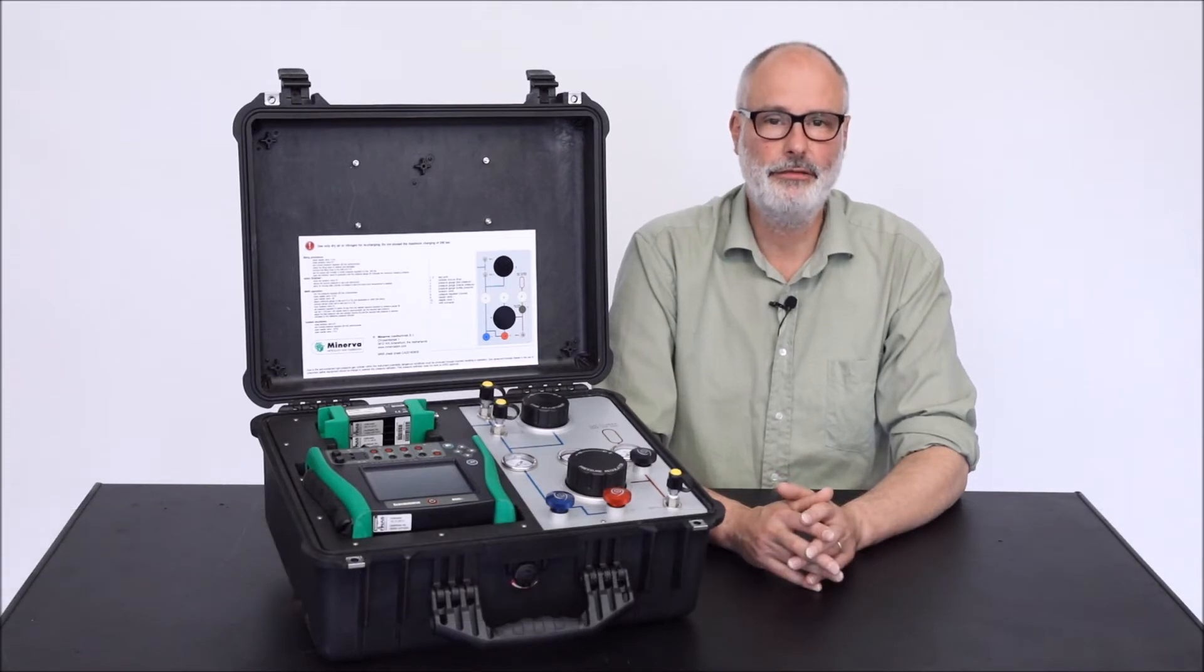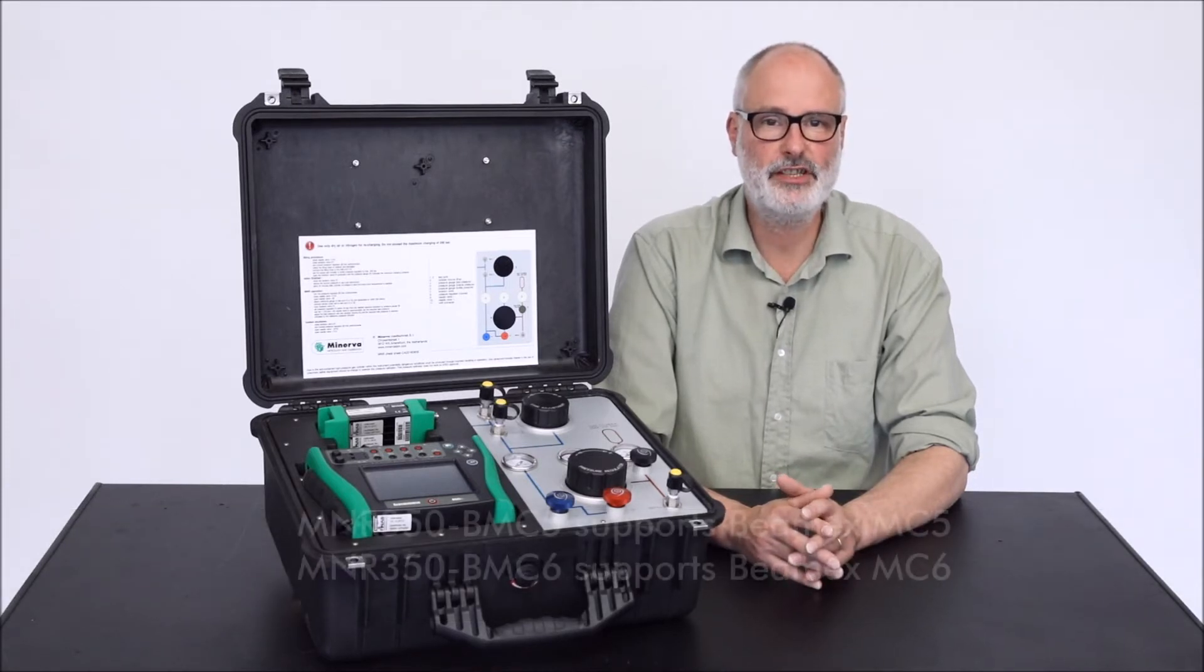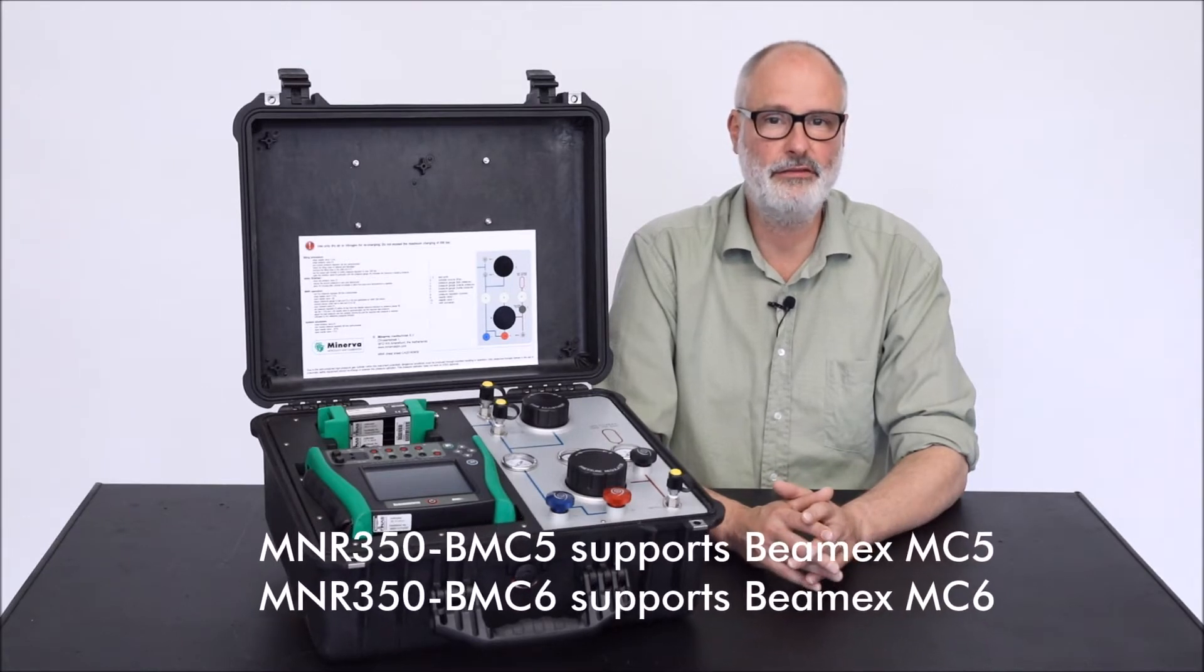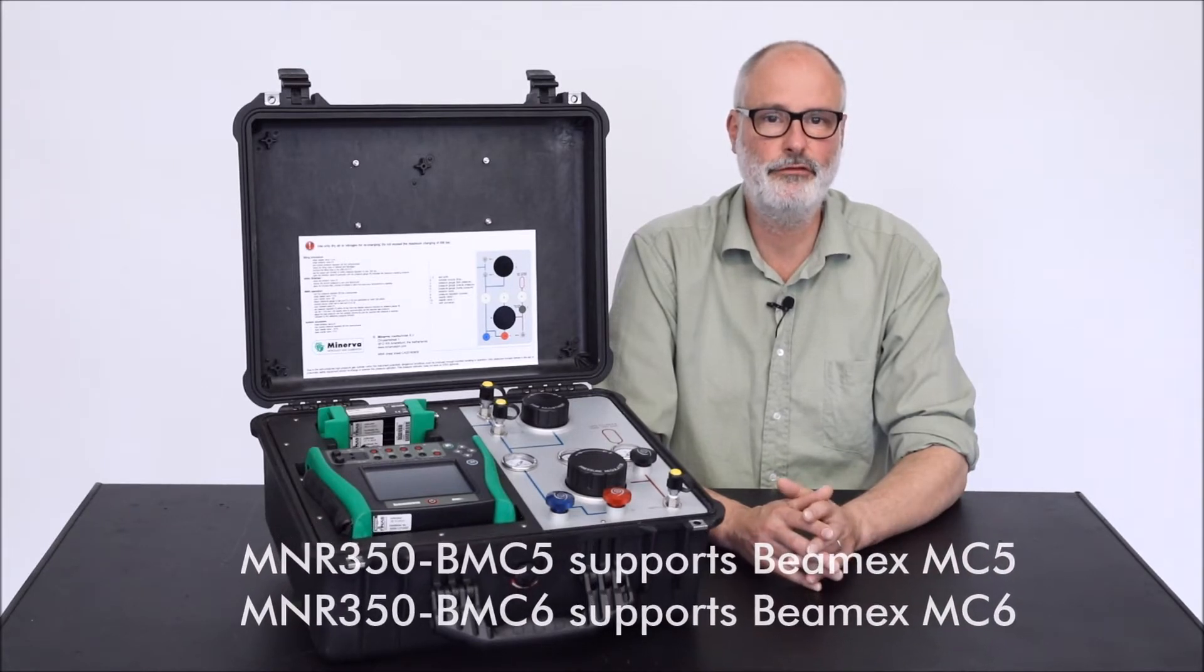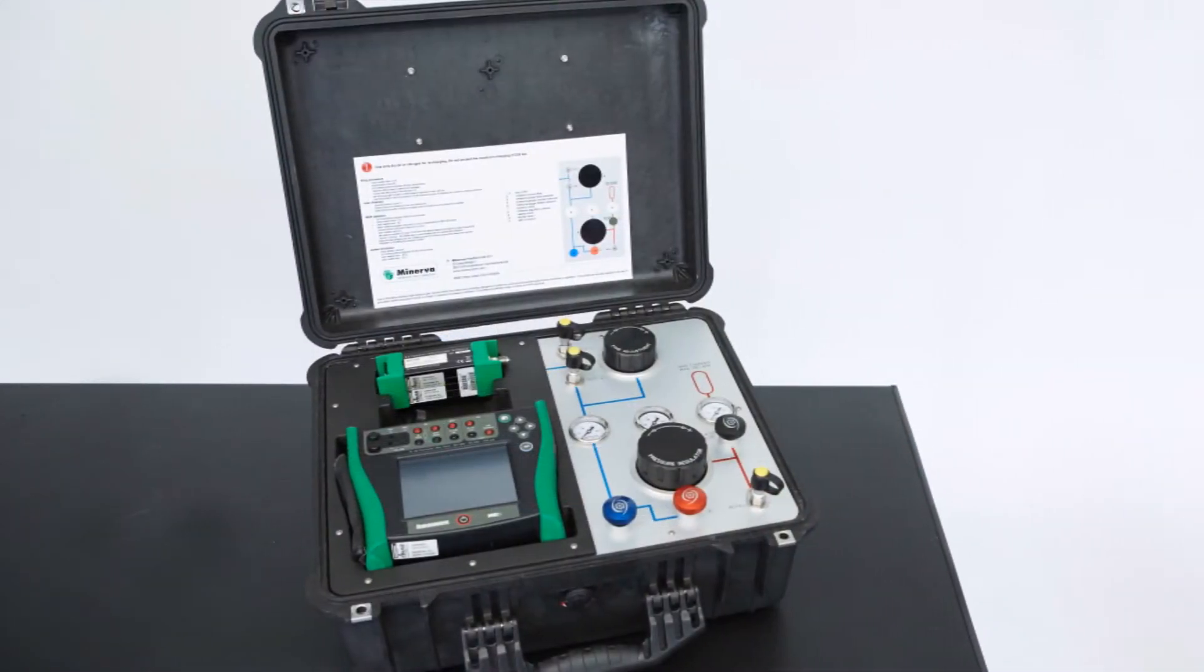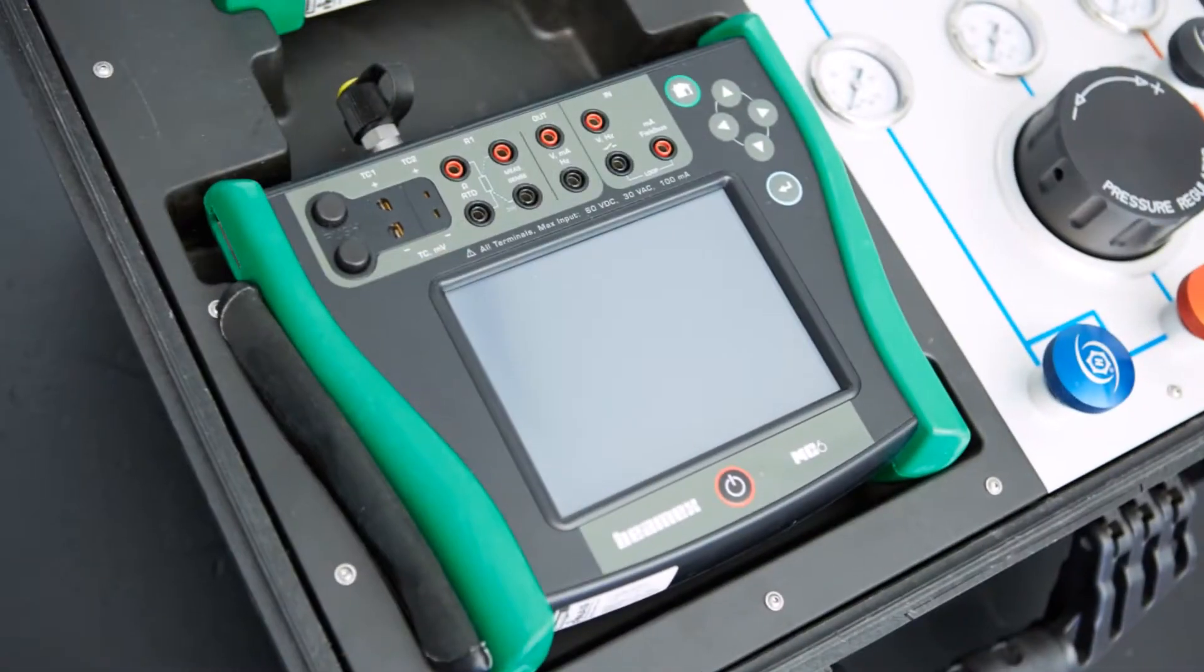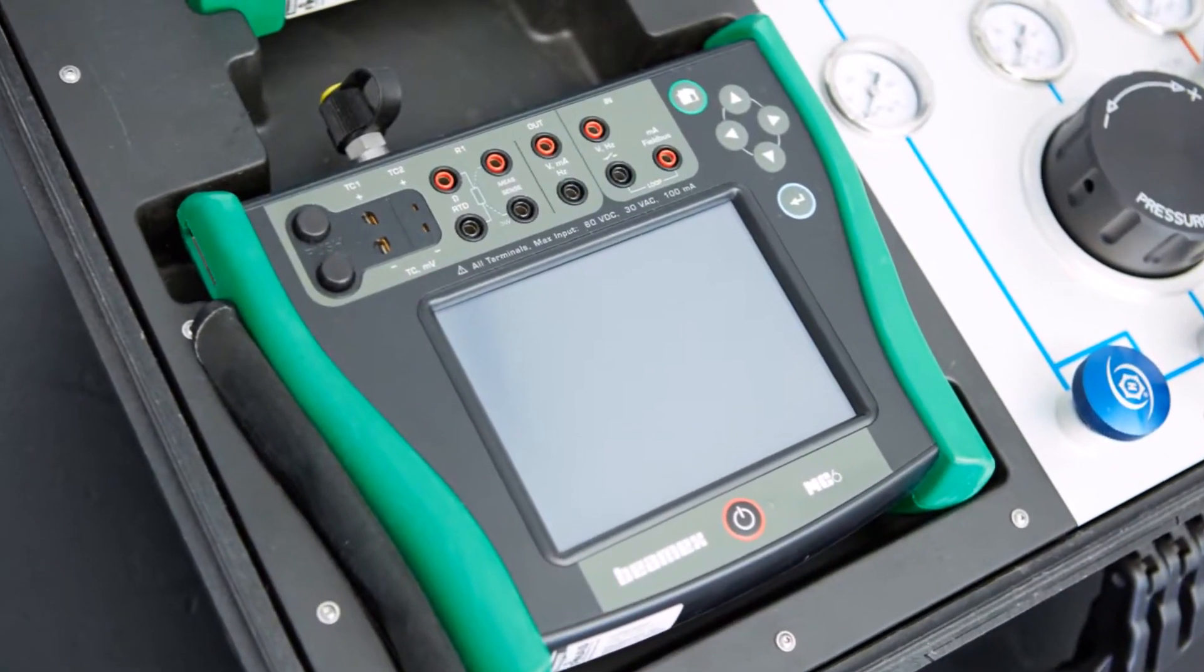The M&R 350 BMC5-6 is especially designed for the BMX MC5 or MC6 multifunction calibrator. These cases offer improved efficiency to quickly and safely perform clean high pressure calibrations at your location.